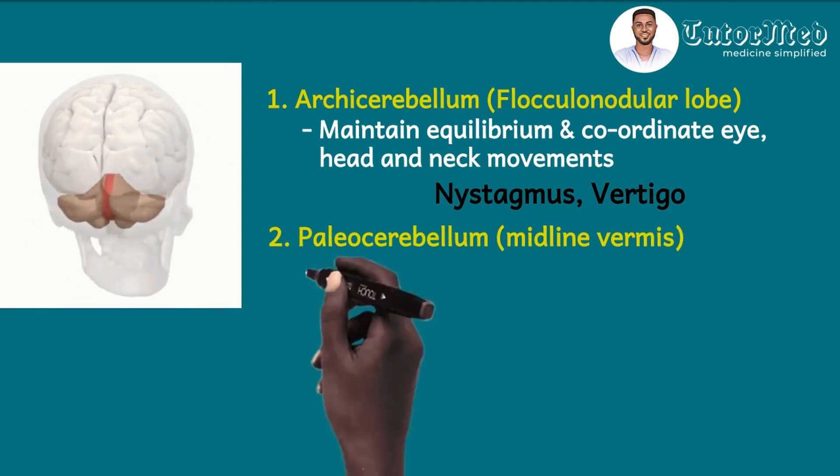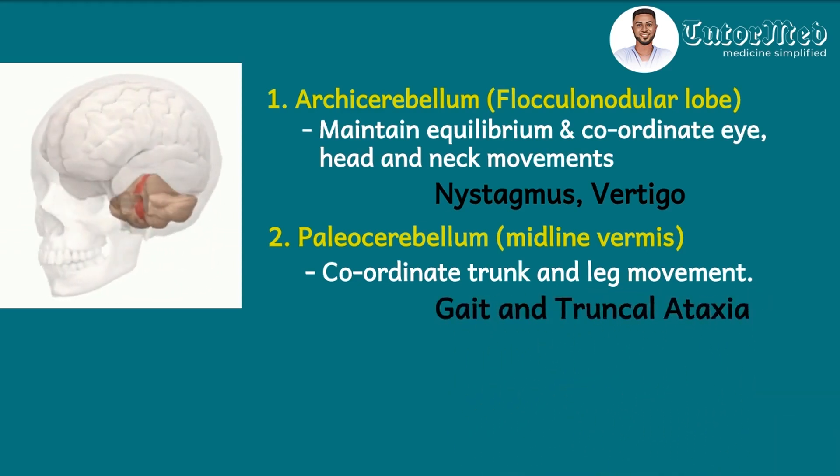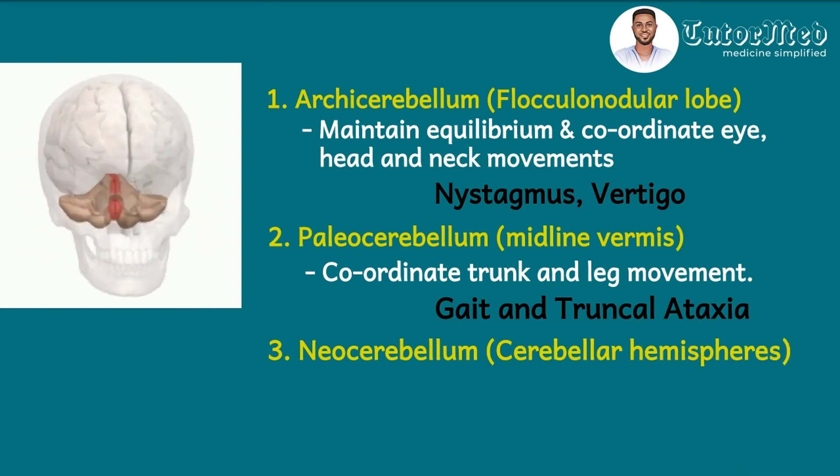Then the next part is the paleocerebellum. Here it is a midline vermis. The function here is to coordinate the trunk and then the leg movement. So if you looked at the clinical features we found, we found ataxia. And so a lesion here will produce ataxia, but this kind of ataxia will be gait and then truncal ataxia. If you have that, it means that it is the midline vermis which has a problem.